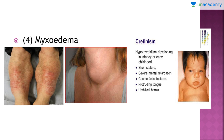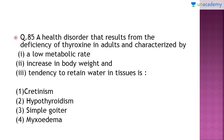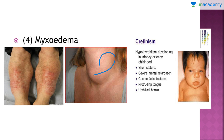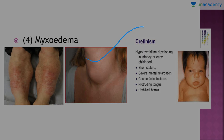Simple goiter is a deficiency of iodine resulting in enlargement of the thyroid gland — the butterfly-shaped gland present in the neck region — causing goiter. These points cover the key distinctions between myxedema, cretinism, and goiter.